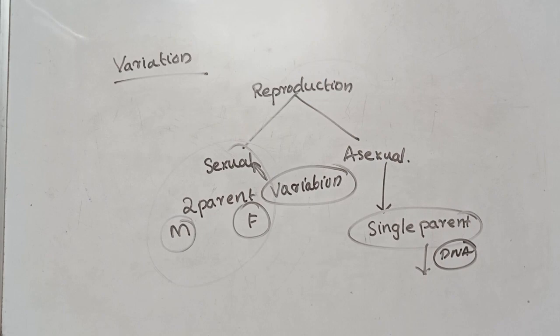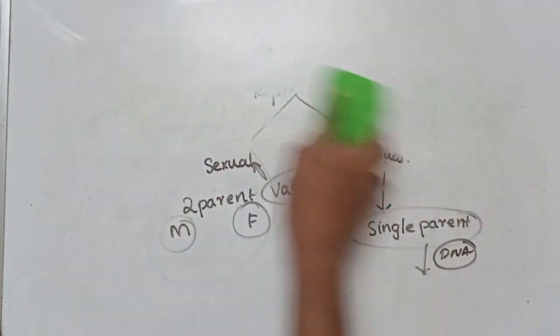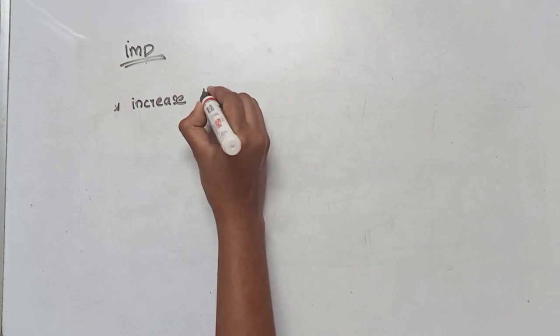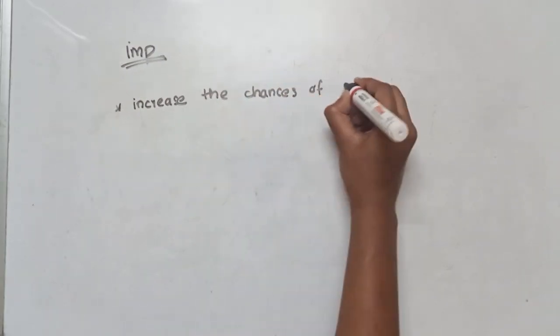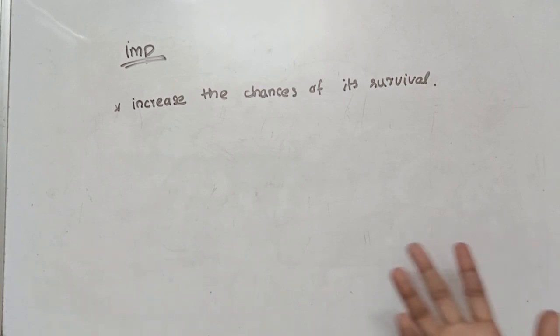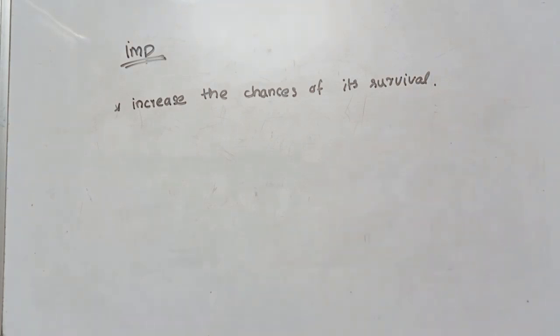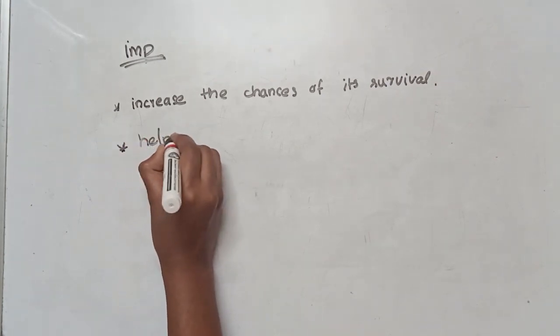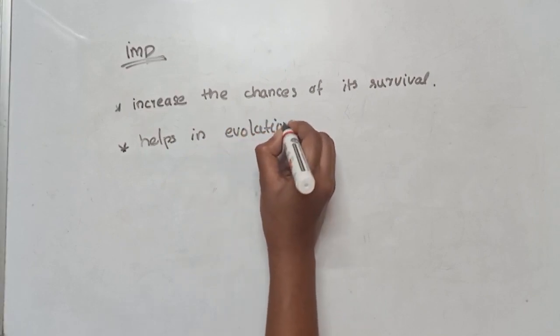So what we are going to study is the transfer of characters and the difference, which is variation. What is the importance of variation? Variation increases the chances of survival. The environment is always changing, and variation helps organisms survive in different environments.